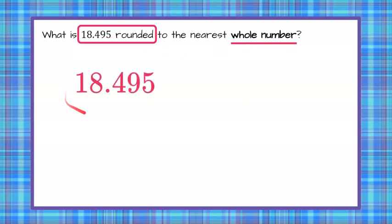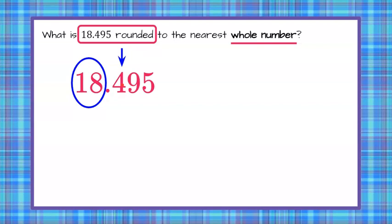One thing we need to understand — I'm writing it bigger so we have something to look at — is that we have our whole number value to the left of the decimal point. When we do this, we are going to consider the first digit to the right of where we're rounding. So the whole number is everything to the left of the decimal point, and we consider the one digit to the right of the decimal point.